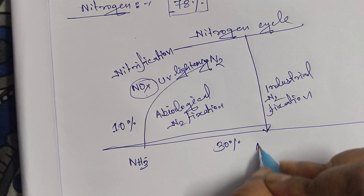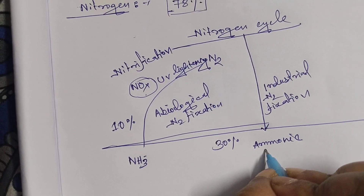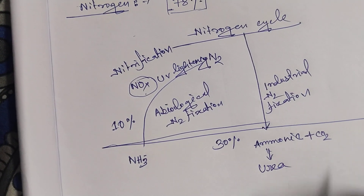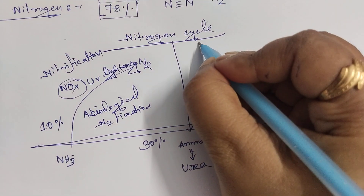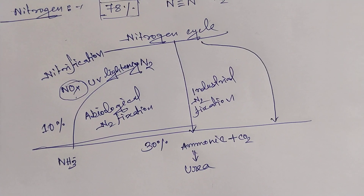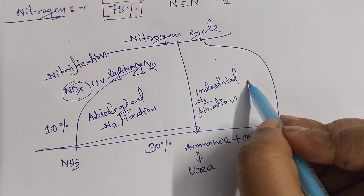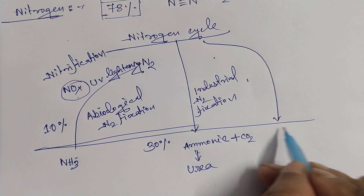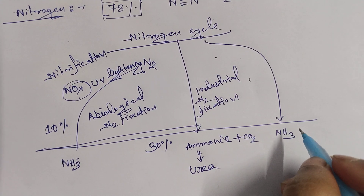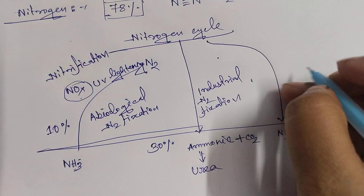Biological nitrogen fixation: 'biological' means there are biological agents present. Here, nitrogen is converted into ammonia, and this ammonia later reacts with carbon dioxide and is converted into urea. In biological nitrogen fixation, the atmospheric nitrogen is converted into ammonia by biological agents like bacteria and cyanobacteria.